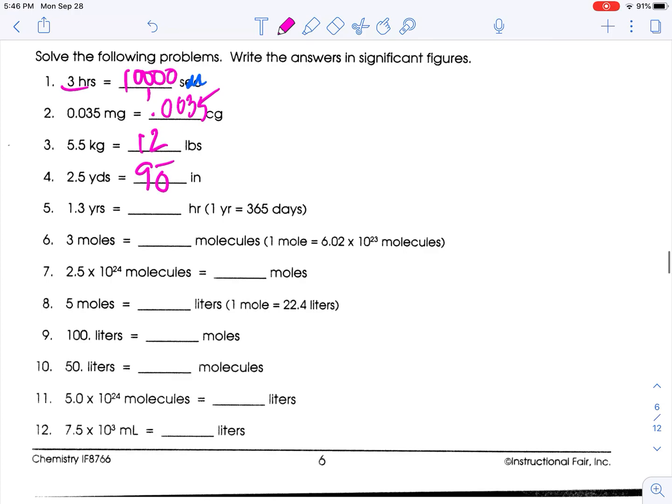Now we have 1.3 years to hours. 1.3 times 365 days - so 1.3 times 365 is 474.5 days, but we only want two sig figs. So here they are: is four enough to round that up? No, so 470 days.